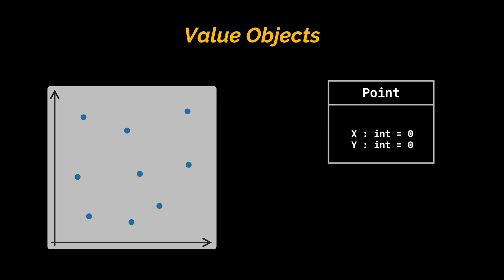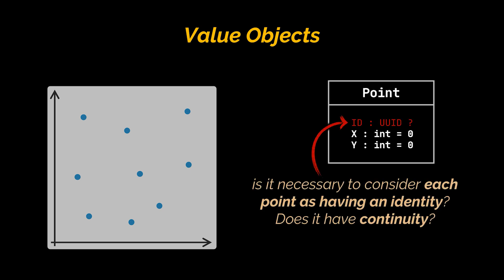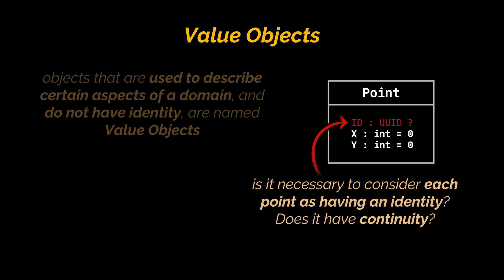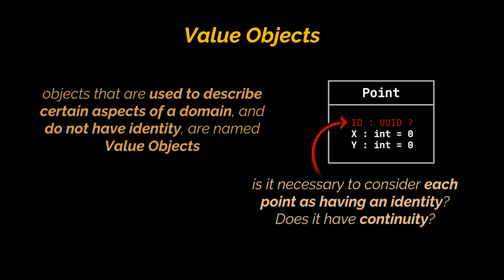Let's jump to value objects. Consider a drawing application where the user is presented with a canvas and can draw any number of points on it. This will be later used to create an object out of the class named point. The point object would contain two attributes associated with the coordinates. Is it necessary to consider each point as having an identity? Does it have continuity? It seems that the only thing that matters for such an object is its coordinates.